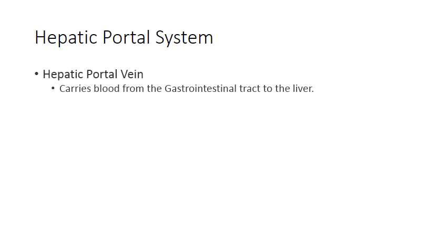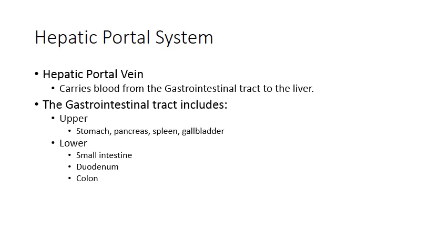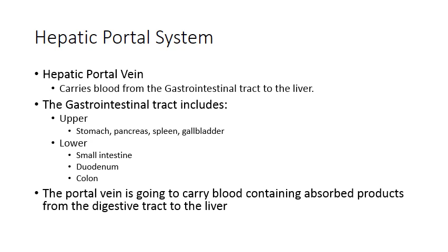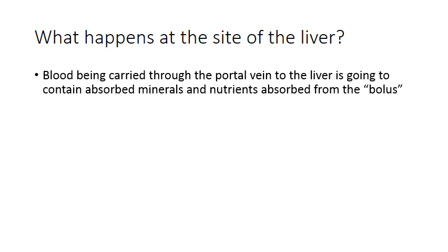The hepatic portal system has to do with the liver. The hepatic portal vein is going to carry blood from different gastrointestinal organs to the liver. Gastrointestinal organs include the stomach, pancreas, spleen, gallbladder, the intestines, and the duodenum — which is the first portion of the small intestine — as well as a number of other organs. The portal vein carries blood and the absorbed products from these organs to the liver.